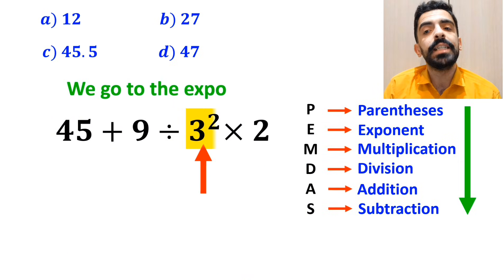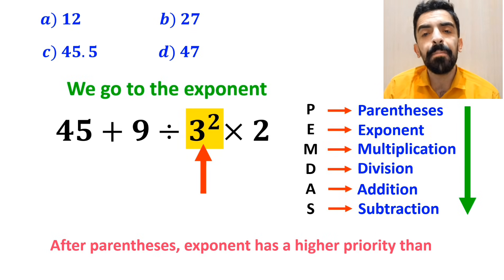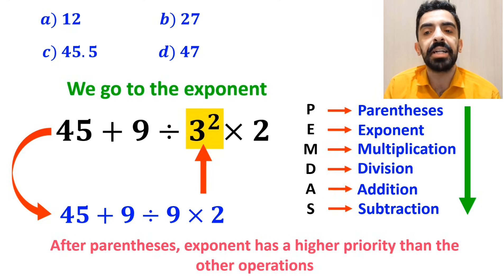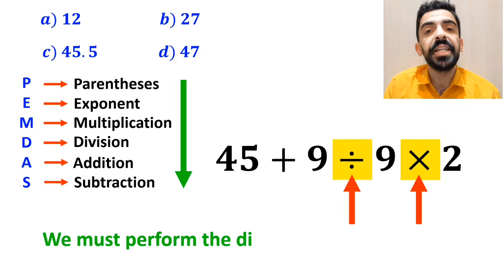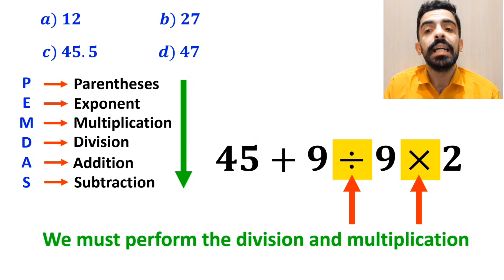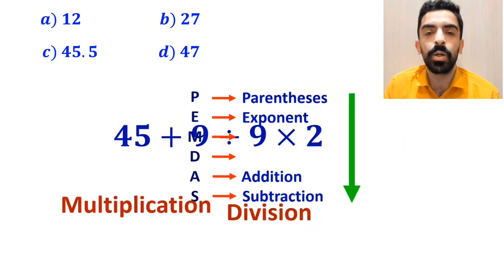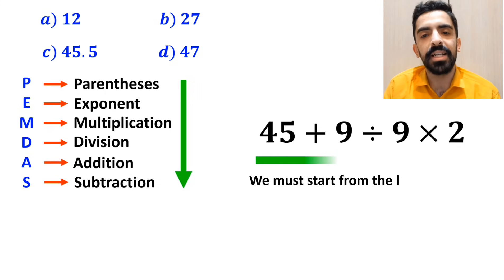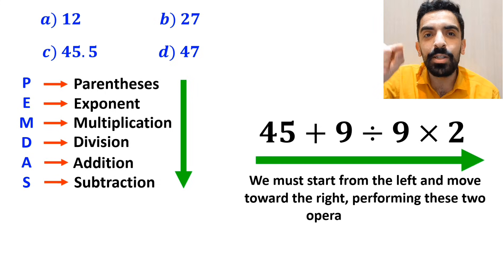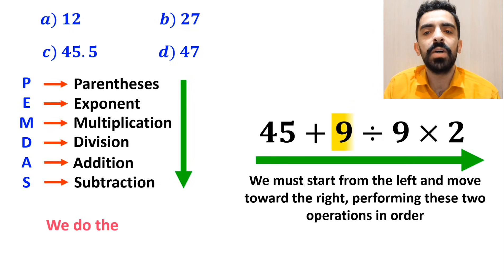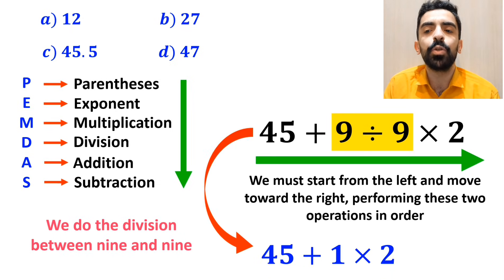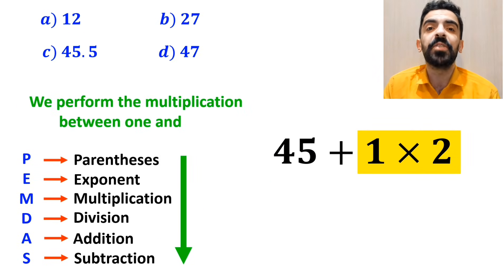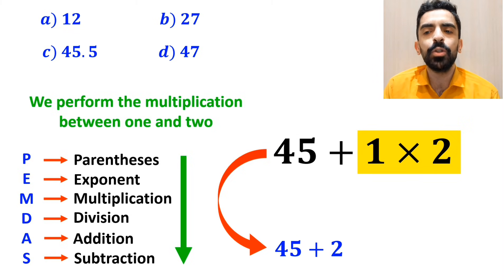In the next step, we go to the exponent because after parentheses, the exponent has higher priority. So this expression simplifies to 45 plus 9 divided by 9 times 2. Then we must perform the division and multiplication. It's really important to understand that in the PEMDAS rule, multiplication and division have the same level of priority. In this situation, we start from the left and move toward the right. So first we do the division between 9 and 9, simplifying to 45 plus 1, then times 2. In the final step, we perform the multiplication between 1 and 2, which simplifies this expression to 45 plus 2.